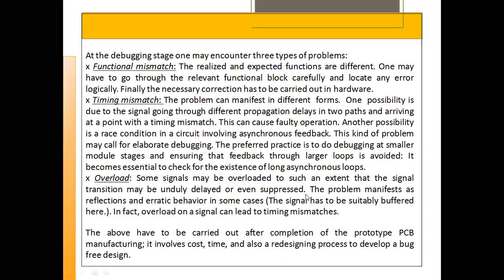After getting the final circuit only can we say whether the expected output is coming or not. At the debugging stage we may have different types of problems: one is functional mismatch, another is timing mismatch, and another is overloading. Functional mismatch means we are expecting some particular functionality, but after placing all the components and ICs and connecting them, the functionality may be different.